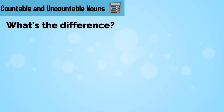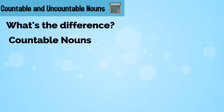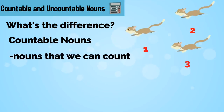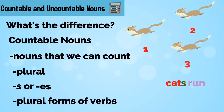So what's the difference between countable and uncountable nouns? Let's begin with countable nouns. Countable nouns are nouns that we can count. Therefore, these nouns can be plural. They can have the plural endings s or es, and they can take plural forms of verbs. For example, I saw three cats run.